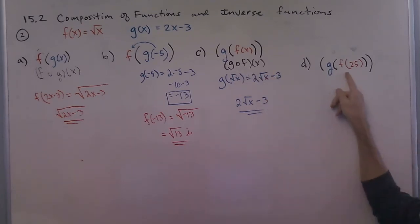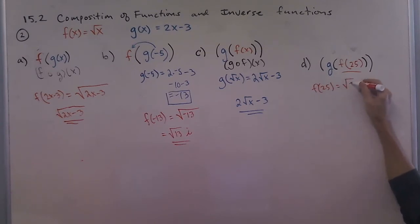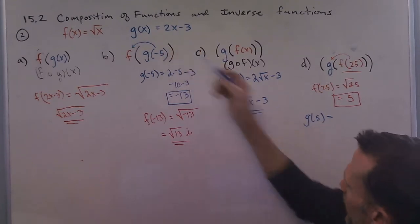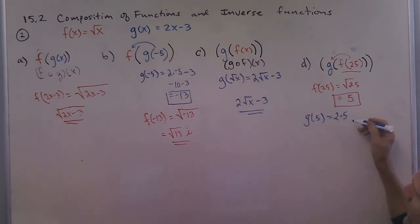And then this last one here, we're going to first calculate f of 25. So we could do f of 25 is equal to the square root of 25, which is equal to 5. And then that's our value that we're going to put inside of the g function. The g function is 2 times whatever the input value is, minus 3. And we get 10 minus 3 equals 7.